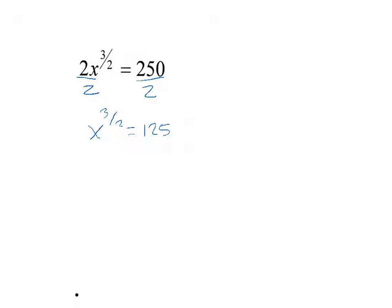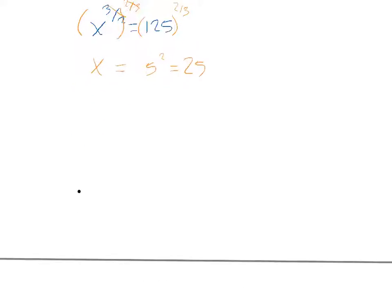In order to get rid of the exponent, I'm going to raise it to the 2/3 power. The exponents cancel, so I just have x equals. We do the root first: the cubed root of 125 is 5, and I'm left with 5 squared, which is 25. Checking: if I plug in 25, the square root of 25 is 5, 5 cubed is 125, times 2 is 250. So that one works out.